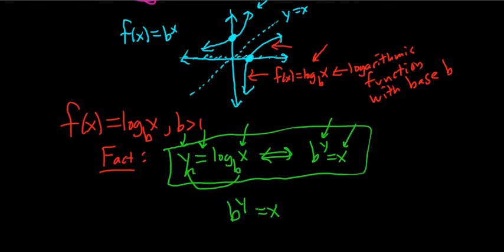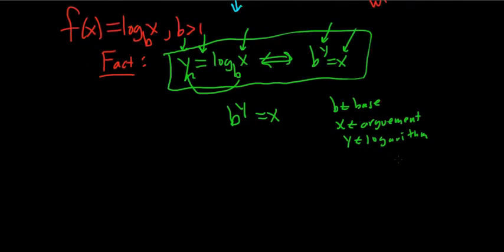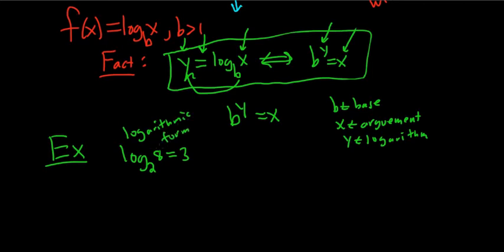Let's do some examples. Before we do, just a couple comments. So b is the base, x is the argument, and y is the logarithm. Let's do some simple examples. Say we have log base 2 of 8 equals 3, in logarithmic form. We want to write it in exponential form. So what you would do is look at the 2. So it's 2 to the 3 equals 8. That's it.